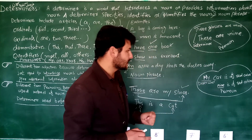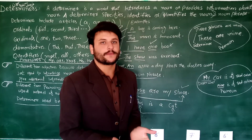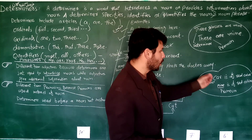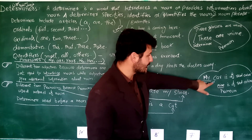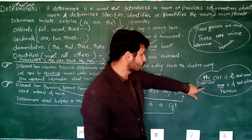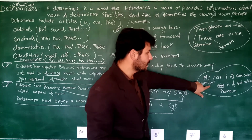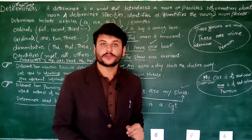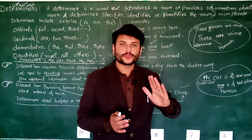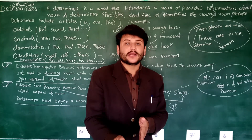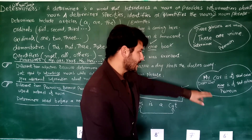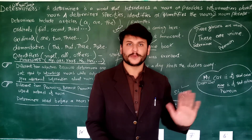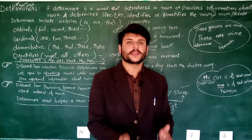Phir yahan par ek aur example - 'my car is of red color' vs 'mine is of red color.' Ab yahan par dekhen - 'my car is of red color' - meri jo gaadi hai woh surkh rang ki hai. To yahan par 'car' noun hai aur 'my' jo hai is a determiner jo hai identify karta hai. Lekin yahan par 'mine is of red color' - to yahan par 'car' maujood nahin hai - that is very pre-understandable - woh jo hai pehle se understandable hai, gaadi ki jo sawaal hai us ke baare mein jawab deta ho. To yahan par 'car' istimal nahin hue kyunke it is understandable between the two persons who are talking about the car.